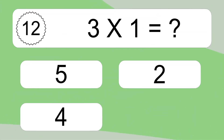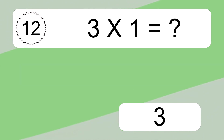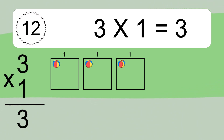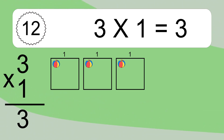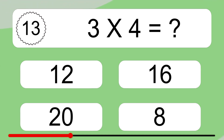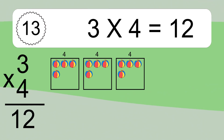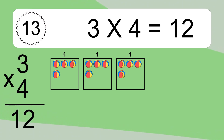Three times one equals what? Three times one equals three. We have three boxes, and each box has one colorful ball inside. If you count all the balls in all the boxes together, you will have three times one balls. We have three boxes, and each box has four colorful balls inside. You will have three times four balls. This equals twelve balls.